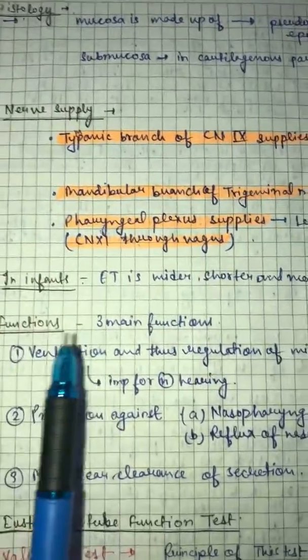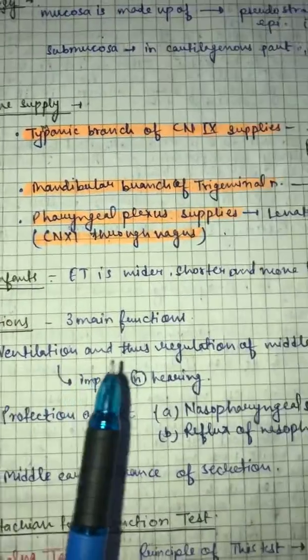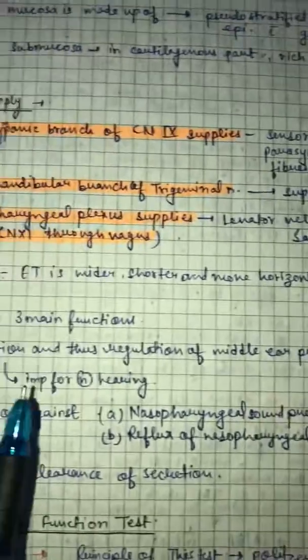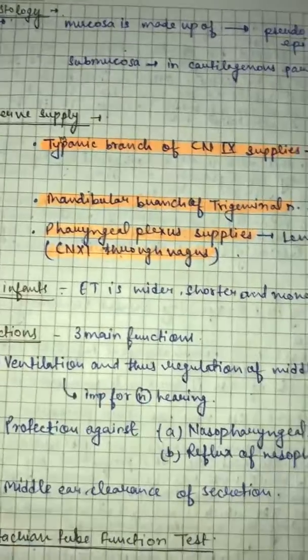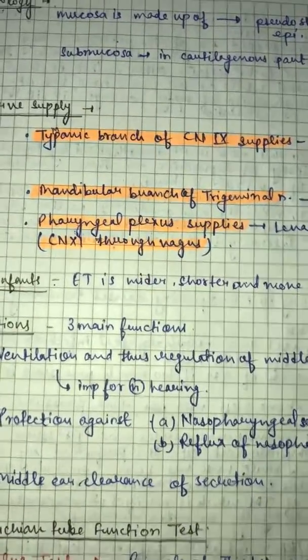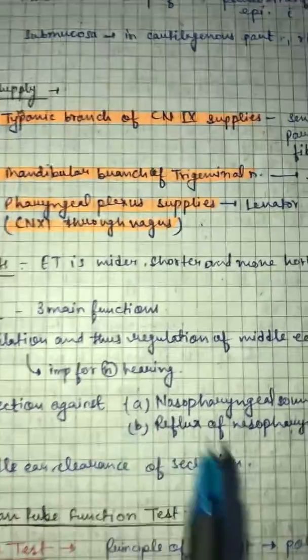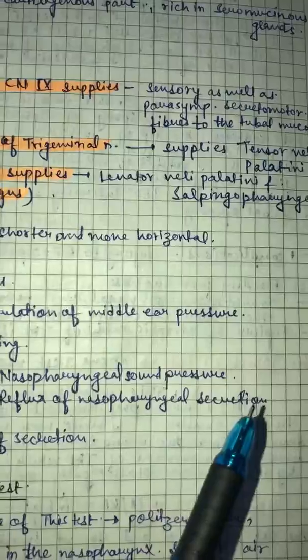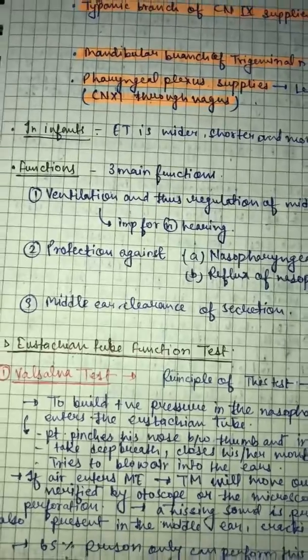Functions. Three main functions. First, ventilation and regulation of the middle ear pressure, important for normal hearing. Ventilation function is very important for hearing. Then the other function, that is protection against nasopharyngeal sound pressure reflux of nasopharyngeal secretion. Then middle ear clearance of secretion.